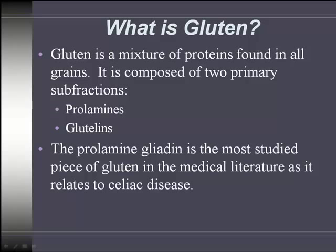So the first question is: what is gluten? Gluten is a mixture of protein found in grain — and two key words here are "all grain," not just some grain, not just select grains. Gluten is actually a generic term. More specifically, gluten is made out of smaller pieces of proteins called prolamines and glutelins.